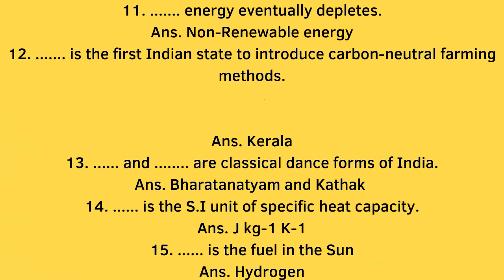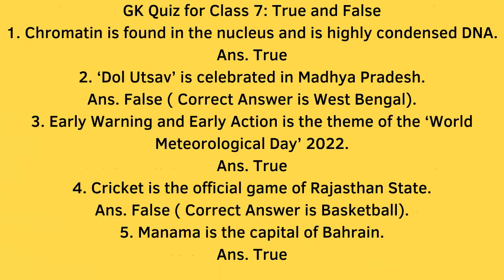Fill in the blank 15: What is the fuel in the sun? Answer: Hydrogen. GK Quiz for Class 7 — True and False. Question 1: Chromatin is found in the nucleus and is highly condensed DNA. Answer: True.